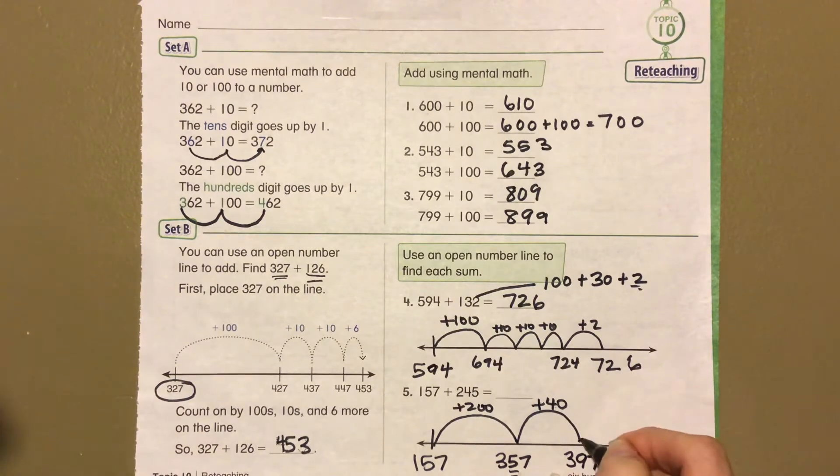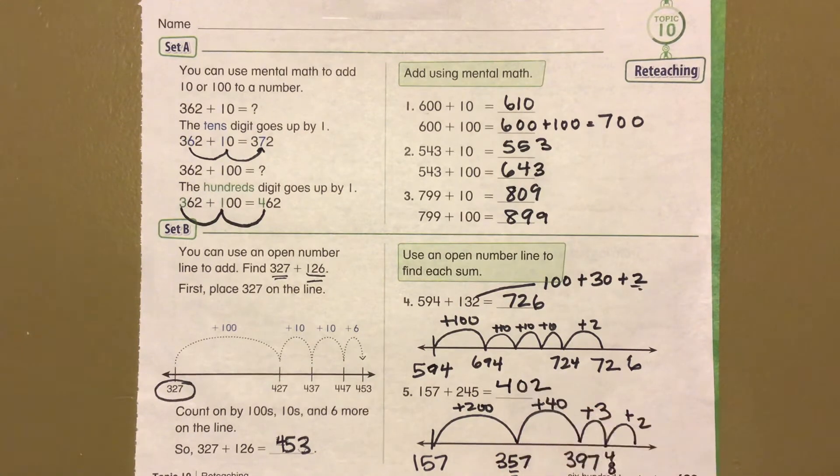And we need to do 5, but guess what I'm going to do? I'm going to do a plus 3 to get me to 400 and a plus 2 to get me to 402 as my answer.